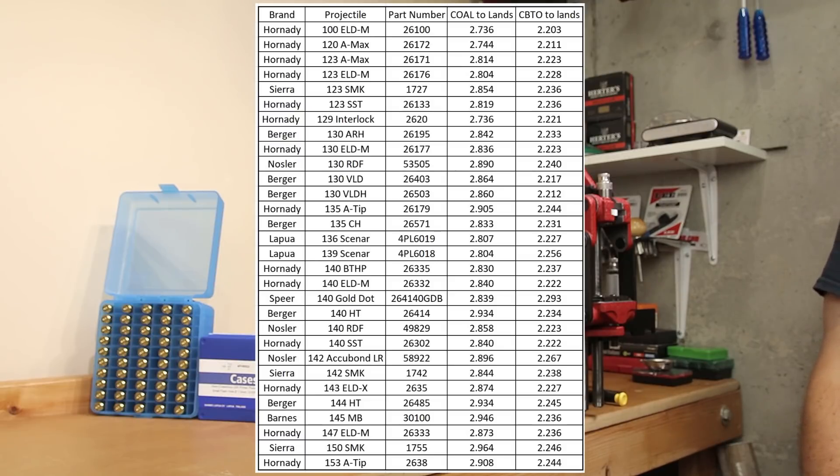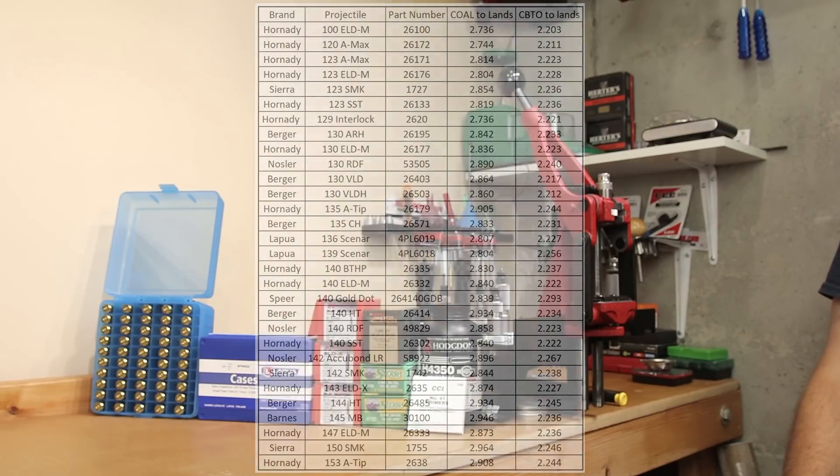The longest projectile to the lands seems to be on our table today, the 150-grain Sierra Match King. To the lands is somewhere very close to 2.964 inches. The fairly repeatable CBTO on that I was getting was about 2.246 inches. On the complete opposite end of the spectrum, the closest distance to the lands was 2.736 inches with the Hornady 100-grain ELDM, part number 26100. But again, not a whole lot of projectile left in the case if you had it out at that distance.